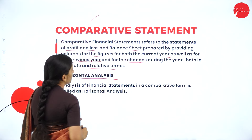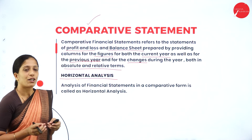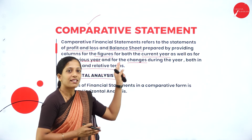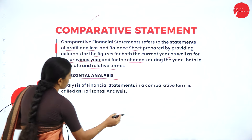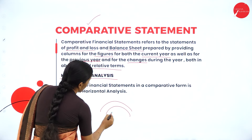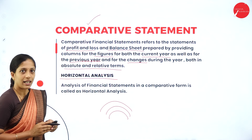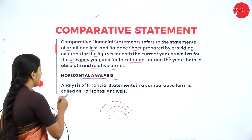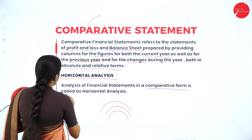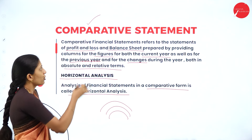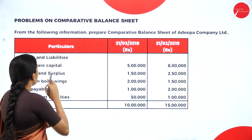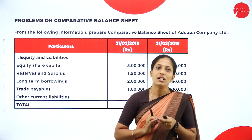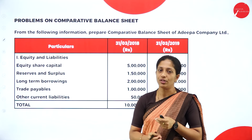Comparative statement comes under horizontal analysis. There are two types of analysis of financial statement: horizontal analysis and vertical analysis. This comparative statement comes under horizontal analysis because your comparison goes horizontally — you compare in a horizontal way. Analysis of financial statement in a comparative form is called horizontal analysis. Now let us see the problems on comparative statement so that you get a clear picture of how the financial analysis is done.